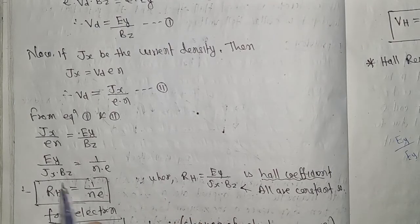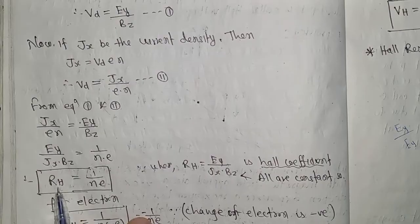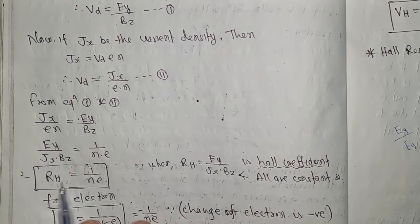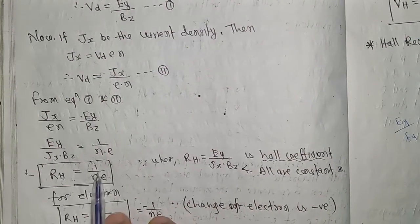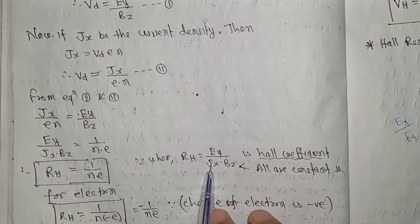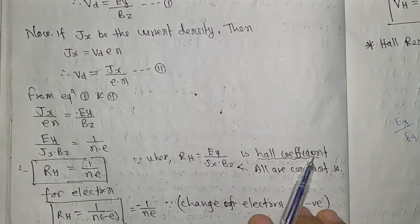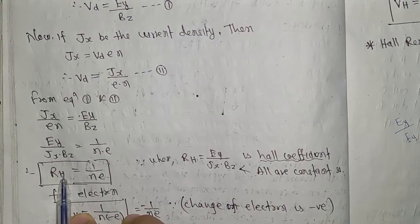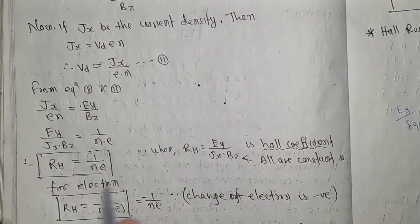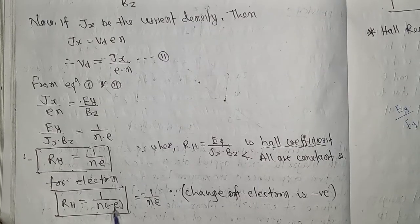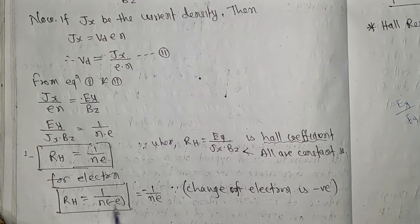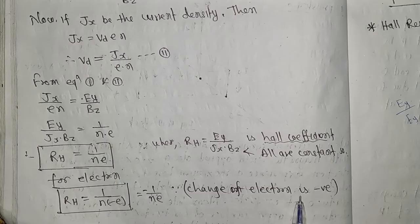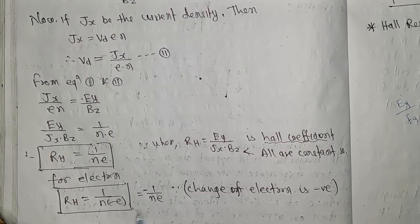The coefficient EY/(Jx·Bz) equals 1/(nε), which is the Hall coefficient, denoted RH. So RH = EY/(Jx·Bz) = 1/(nε). This is the Hall coefficient expression. For electrons, since the charge of electron is negative, RH = -1/(nε).